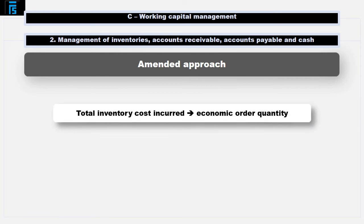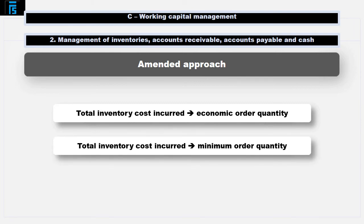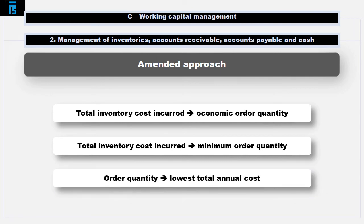1. Calculate the total inventory cost incurred, i.e. ordering, holding and purchase costs, if the economic order quantity is used. 2. Calculate the total inventory cost incurred, as defined above, at the minimum order quantity required to earn each level of discount. 3. Choose the order quantity with the lowest total annual cost.